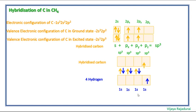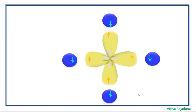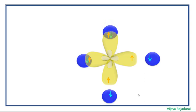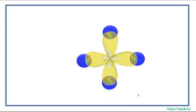Here you can see this 1s orbital. Here you can see the mixing, that is the overlapping of sp3 hybridized orbital of carbon and 4 hydrogen forming methane molecule.